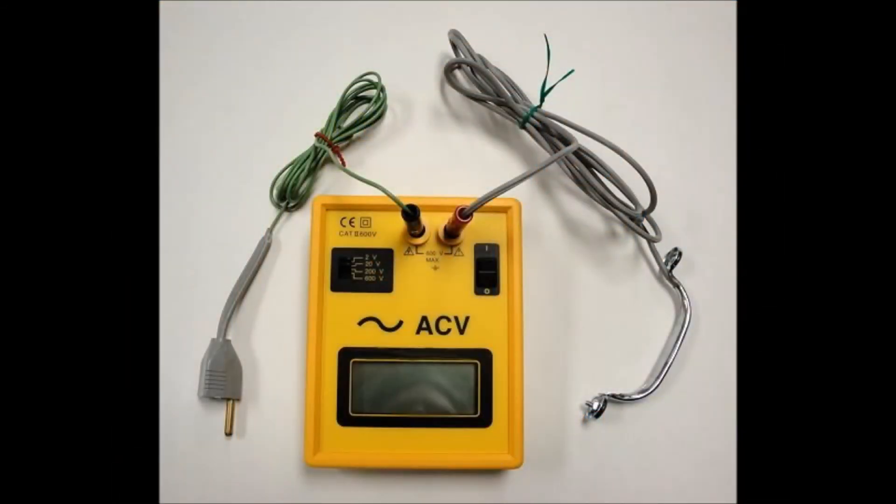As you move nearer to sources of electromagnetic fields, you may notice an increase in your body voltage. When a grounded shielding device is placed between the source of EMF and yourself, you may notice a decrease in your body voltage.